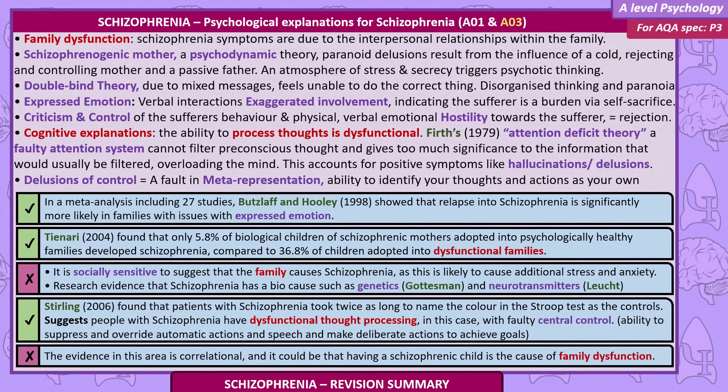Cognitive explanations: the ability to process thoughts is dysfunctional. Frith's attention deficit theory proposes that a faulty attention system cannot filter pre-conscious thought and gives too much significance to information that would usually be filtered, overloading the mind. This accounts for positive symptoms like hallucinations and delusions.